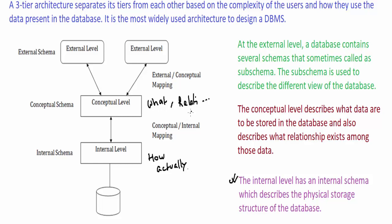The conceptual level has a conceptual schema that describes the structure of the whole data for the community. It hides the physical storage structure and concentrates on describing entities, data types, relationships, user operations, and constraints.